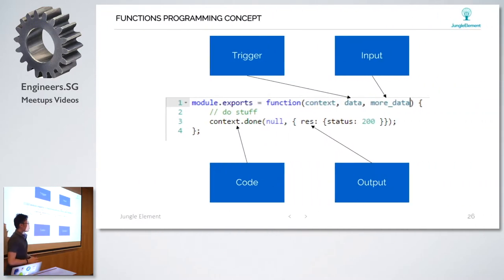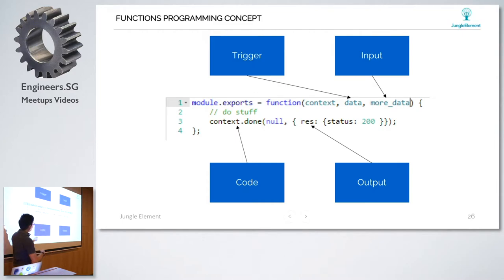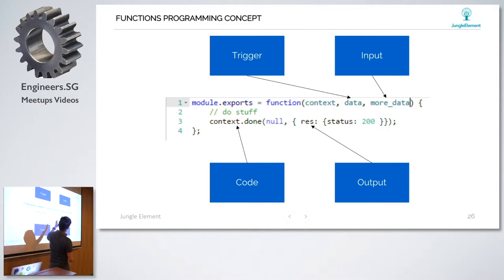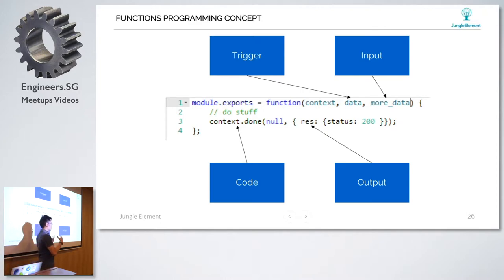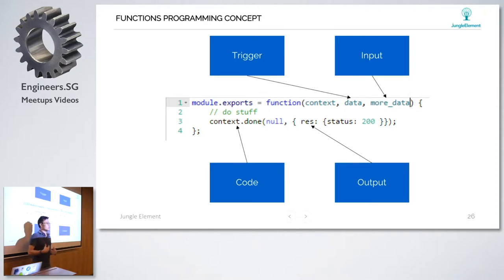The functions programming model looks something like this: you have input data and a trigger. Once this information comes in, your code returns an output. This is what happens at an Azure Function level - you put in information, process it, build it up, and send the output. Once you get the output, you can start manipulating the things that you need to.